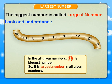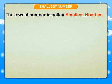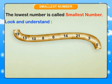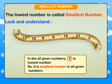Largest and smallest numbers. The biggest number is called the largest number. Look and understand — in all the given numbers, 21 is the biggest number, so it is the largest number. The lowest number is called the smallest number. In all the given numbers, 3 is the lowest number, so it is the smallest number.